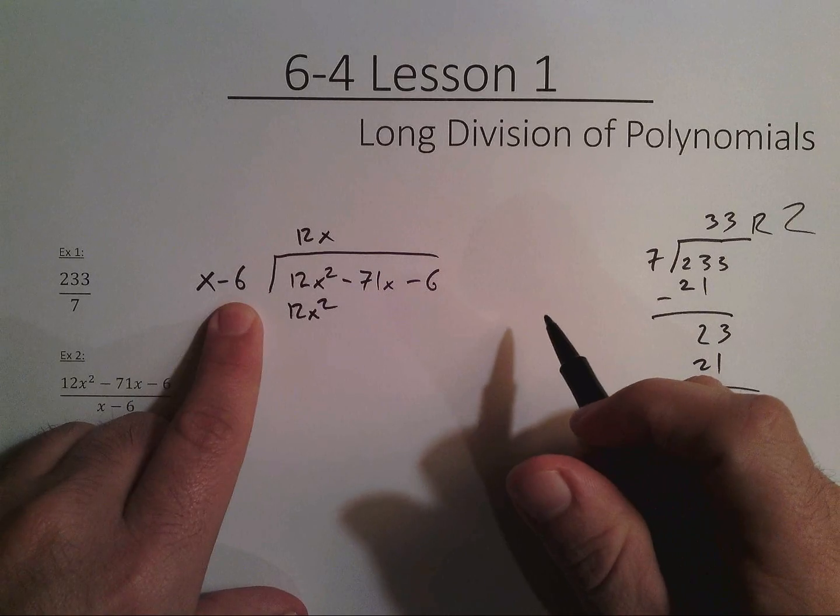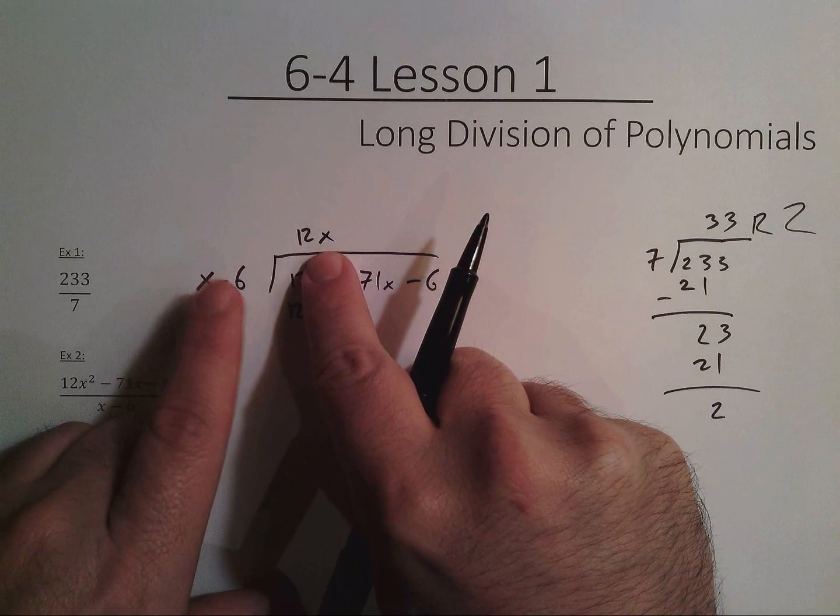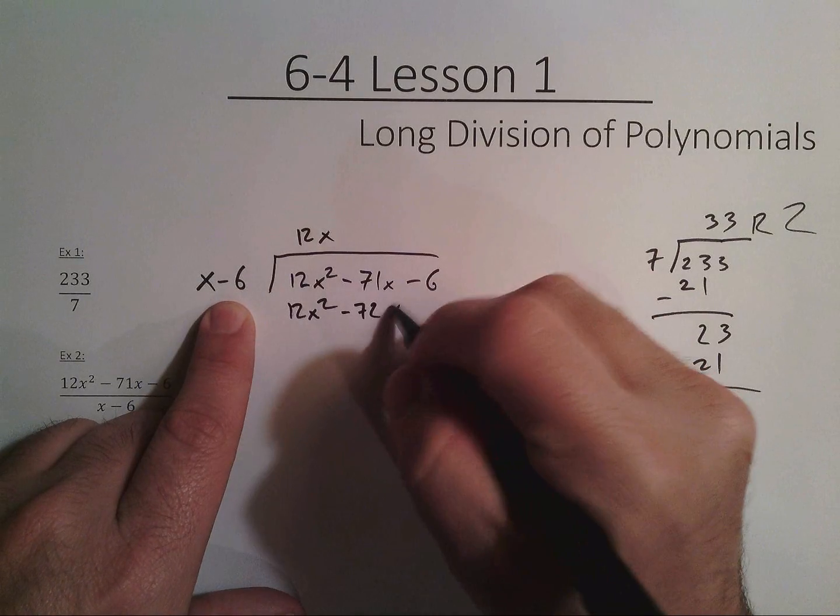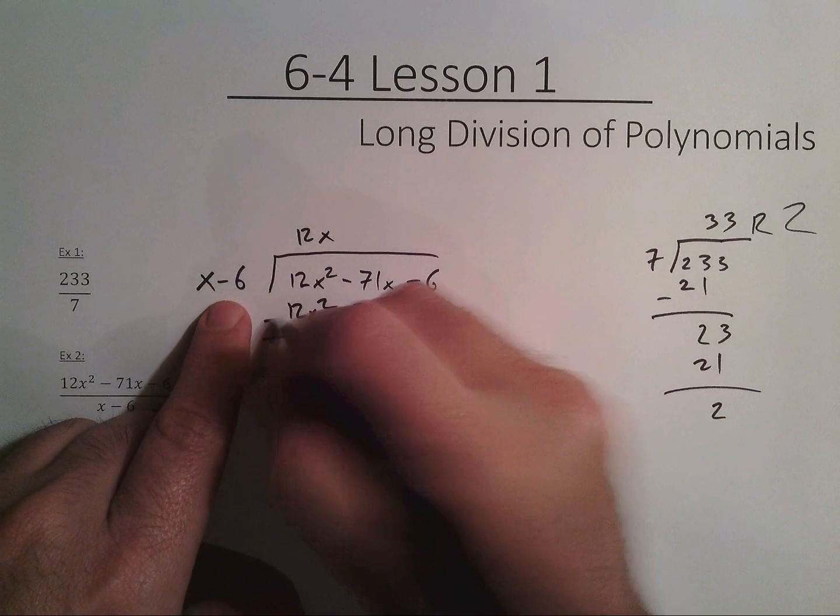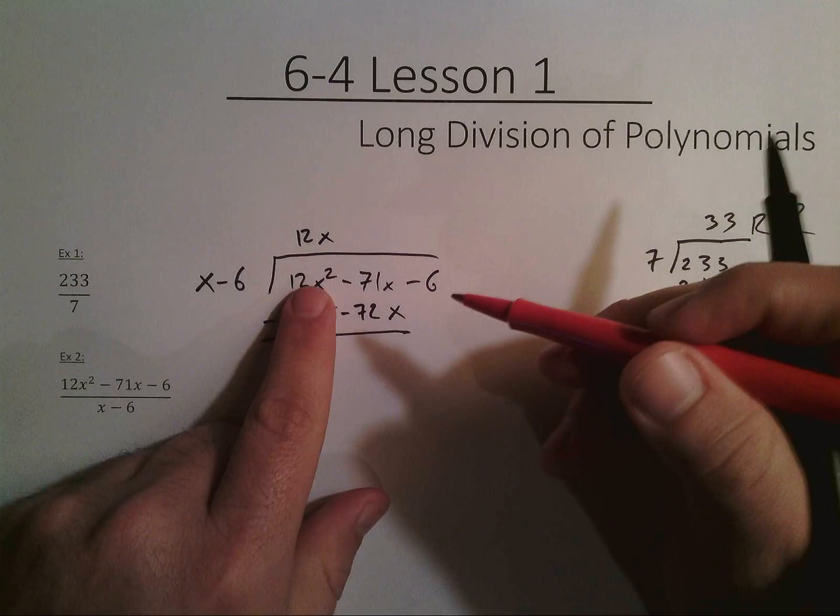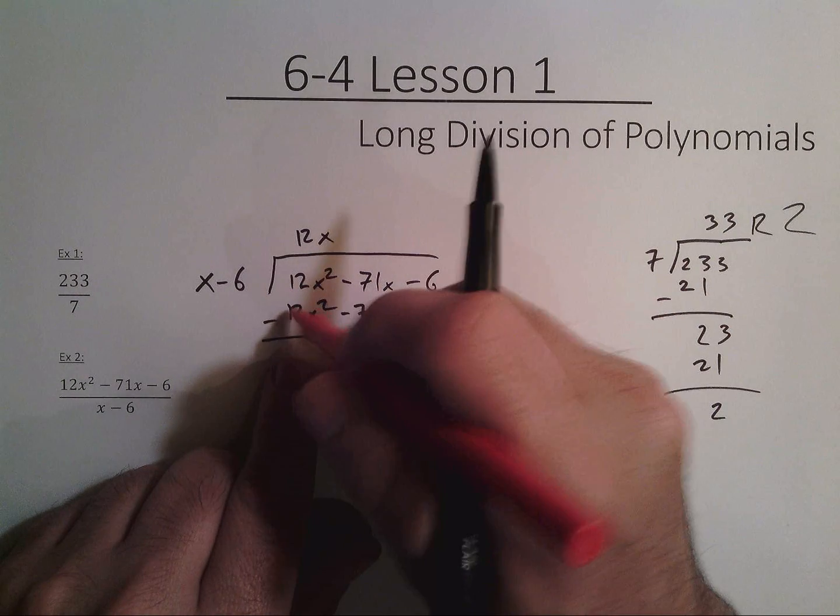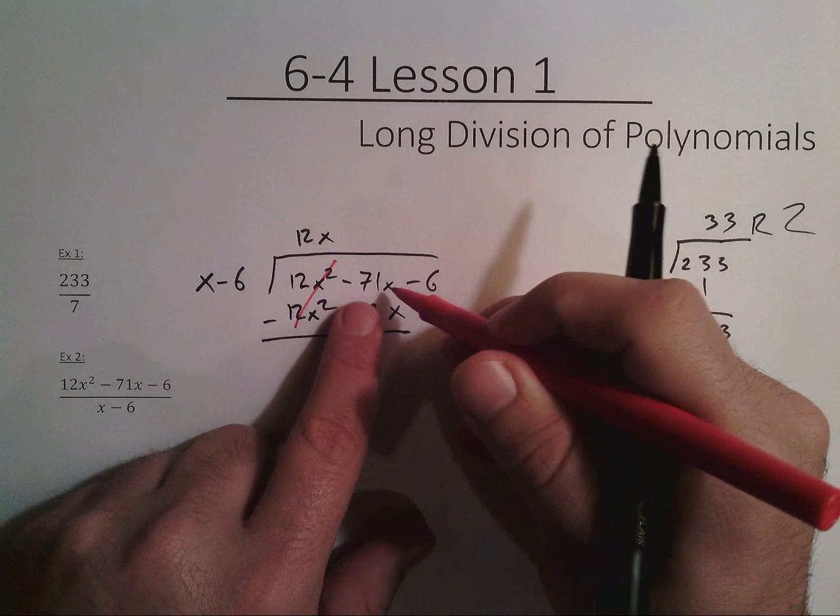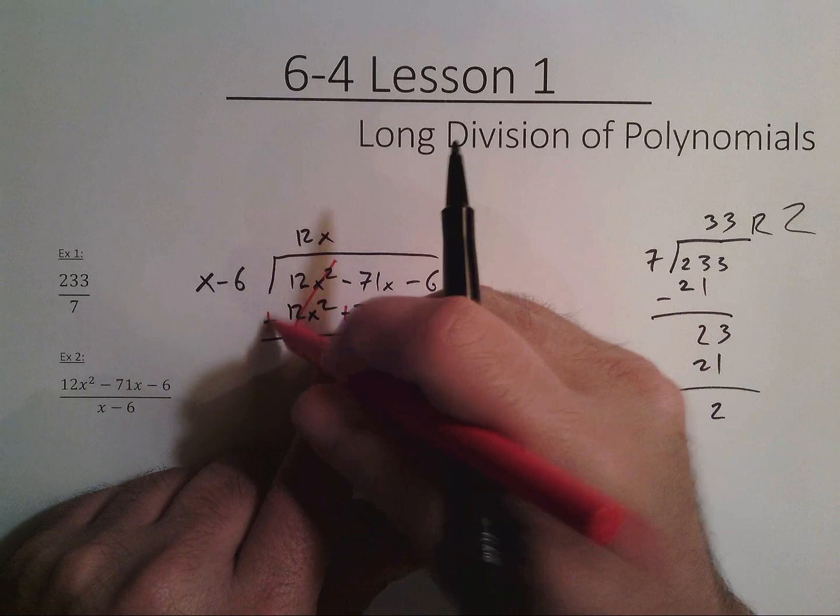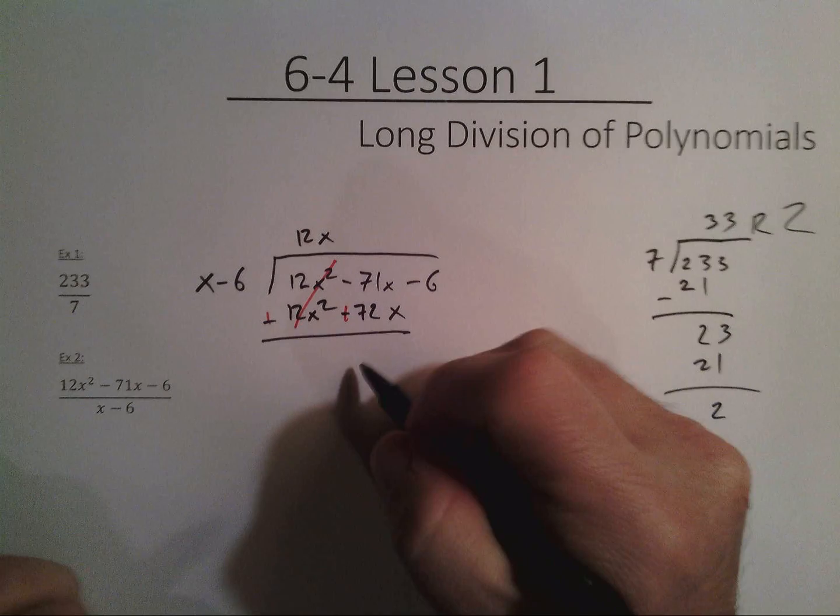But you see this minus 6 here? I'm going to take the 12x, multiply it by the negative 6, to get negative 72x. And now I'm going to subtract these. Oh look, the 12x squared minus 12x squared cancels. And now I have negative 71x minus negative 72x, in other words, add it. So I end up with x.